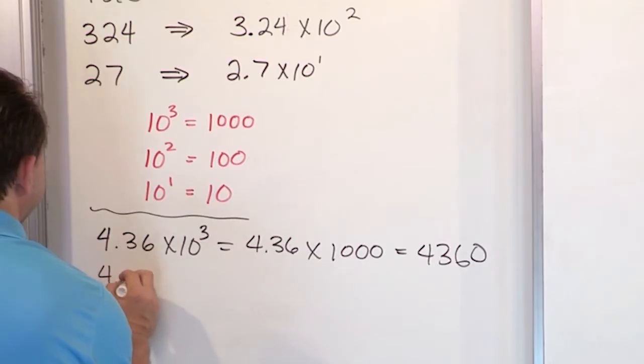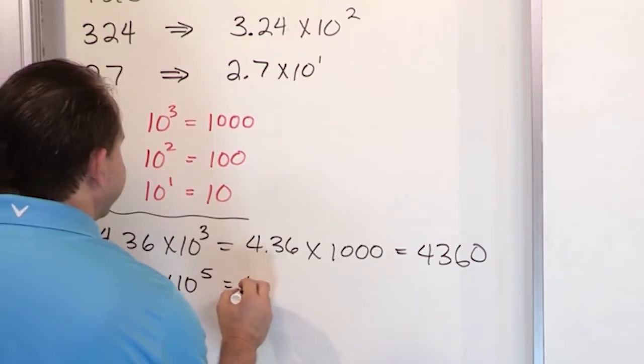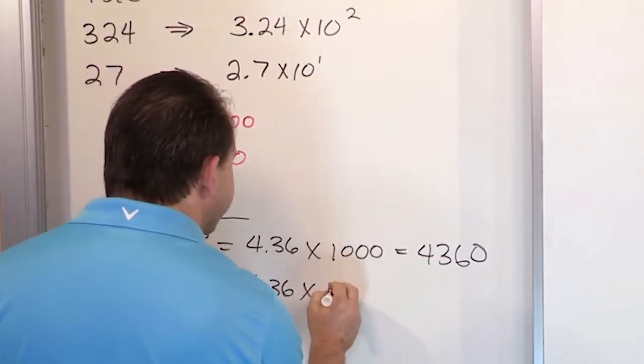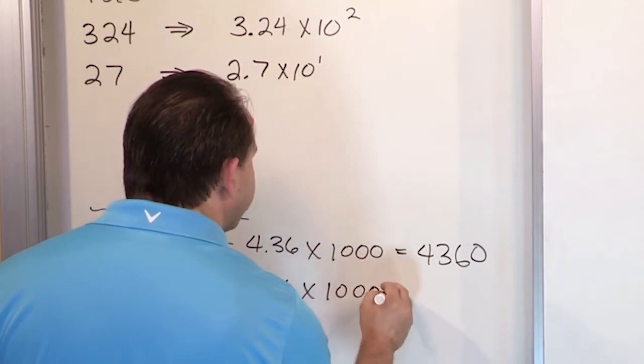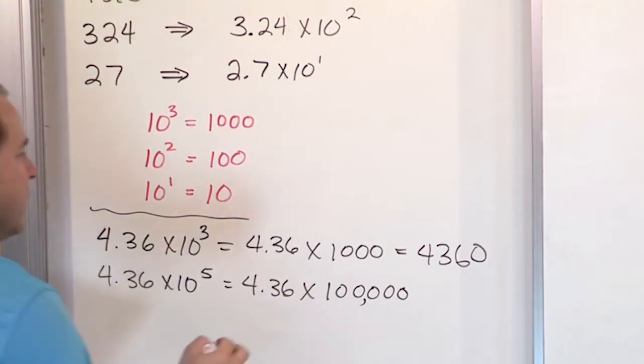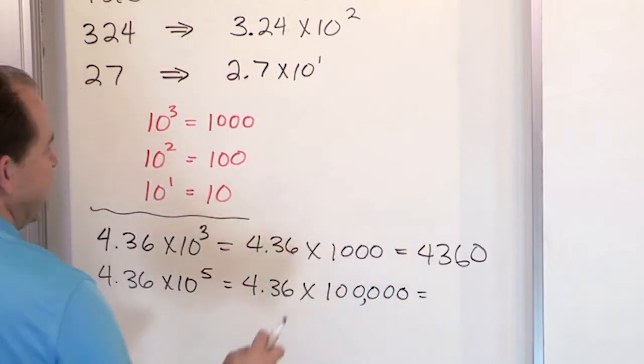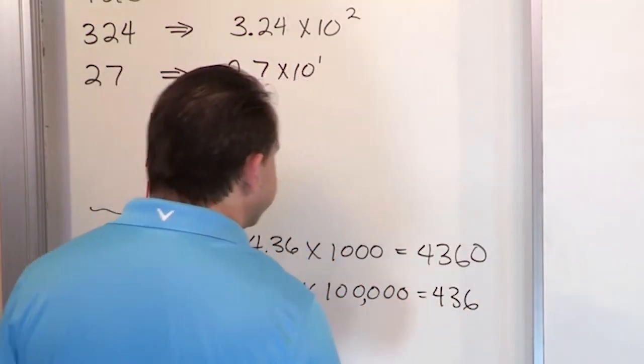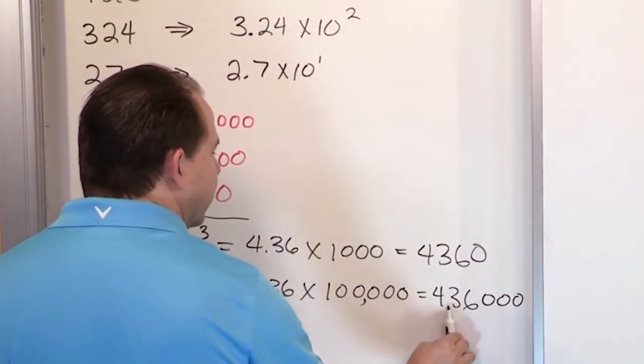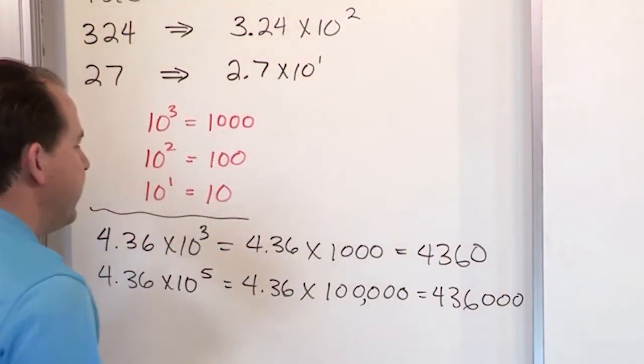If it was 4.36 times 10 to the fifth power, what would it be? It would be 4.36 times, now 10 to the fifth means we're not multiplying by 1,000, we're multiplying by 100,000, because there's two more zeros there. So then what would you have? You would go one, two, and then I have to go three, four, five. I need to add some more. So it's going to be 4, 3, 6, 3, 4, 5. Just double check yourself. We start here. We move times 10 to the five, which means 1, 2, 3, 4, 5. And we get to the end there.